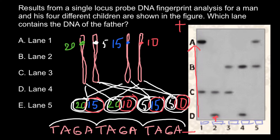Let's take a look at another genotype. If this would be a father's genotype, this can be the genotype of a child because one allele is present here. Variant number four also can be a child because this allele is present both in the father and the child. But this variant excludes this candidate as a father because none of these alleles can be found in the father's genotype. So the first variant — no. The second variant — can this be a father of these children?